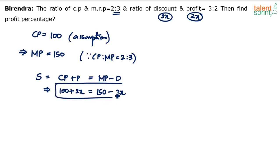That is the only equation you have to write. All the previous steps are not required. I mean, I am writing it for your explanation. You should straight away start with this equation: 100 plus 2x equals to 150 minus 3x. What happens? 5x comes out to be 50. x comes out to be 10. x is equal to 10.